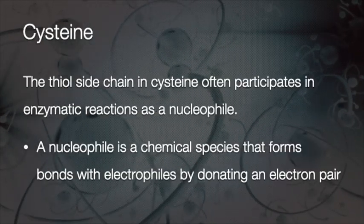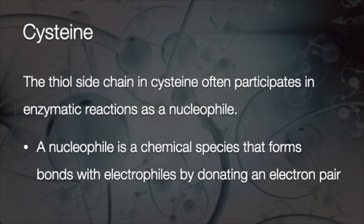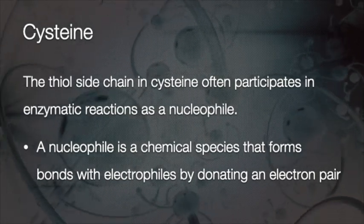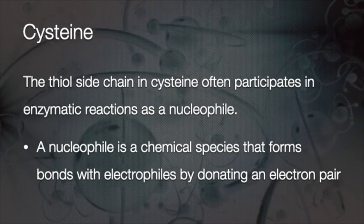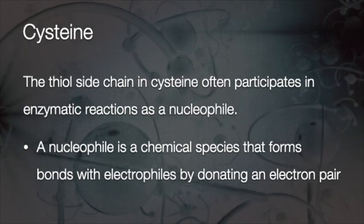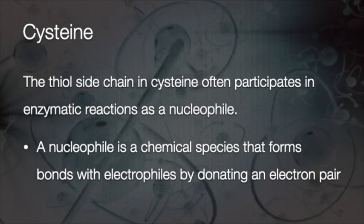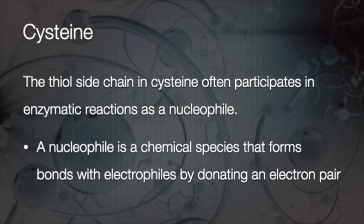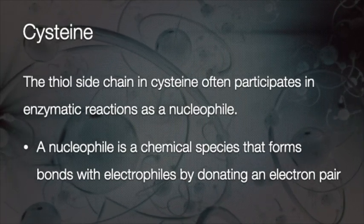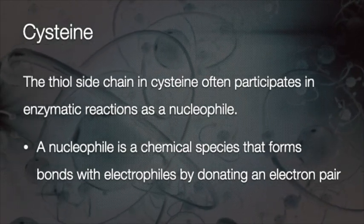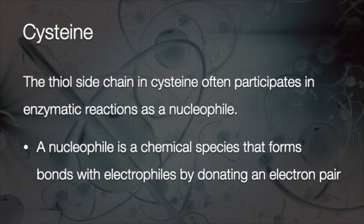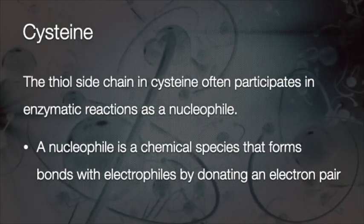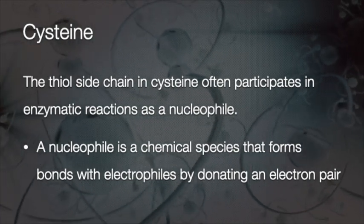Cysteine has a thiol side chain which often participates in enzymatic reactions as a nucleophile. A nucleophile is a chemical species that forms bonds with electrophiles by donating an electron pair. This is very important in the oxidation-reduction reactions that happen in our body.